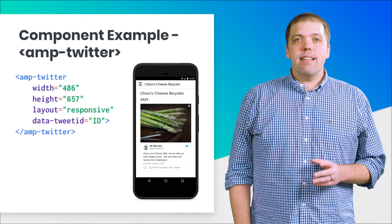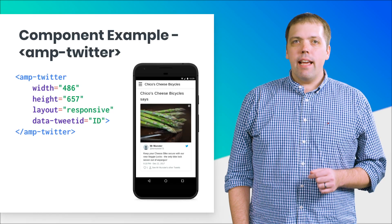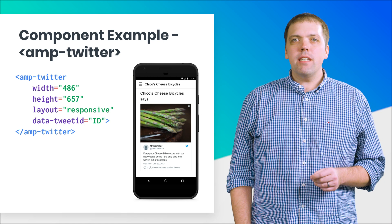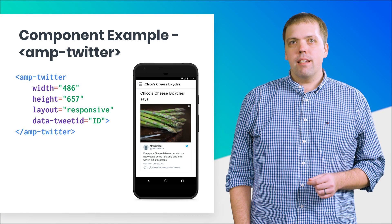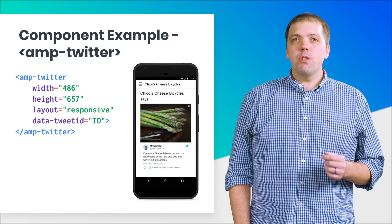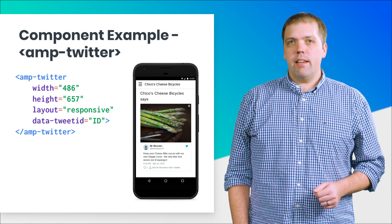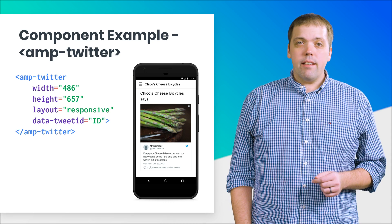Here's an example of AMP Twitter. AMP Twitter is an extended AMP component, which means you need to include its JavaScript. Again, you specify the dimensions and the layout type. You then provide the tweet ID, and that's it.